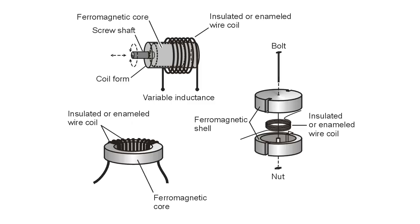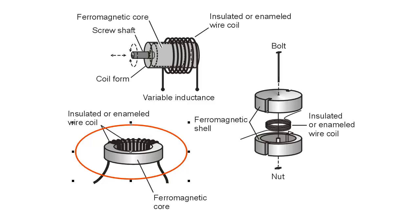In order to overcome that problem, engineers developed — they became relatively more popular during the 1960s and 70s — the toroidal core, which is a donut-shaped core. When you wrap the wire around this kind of core, the magnetic flux tends to remain confined almost entirely within that core.